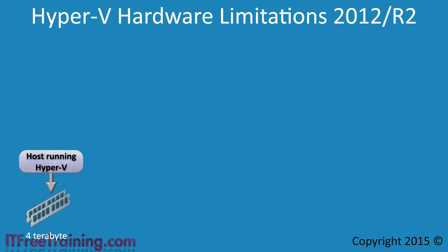Hyper-V will support 320 logical processors. Logical processors essentially means the number of cores. So if you are using CPUs with 4 cores, 320 logical processors would allow you to have 80 CPUs in that server.